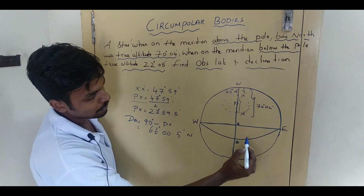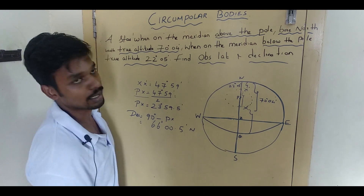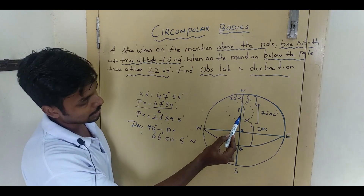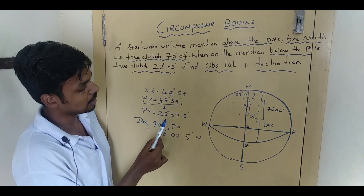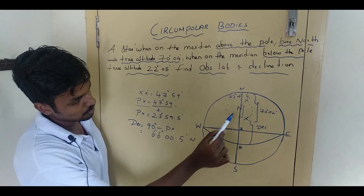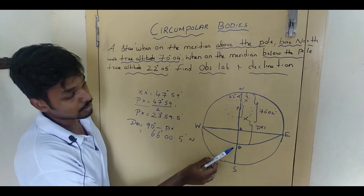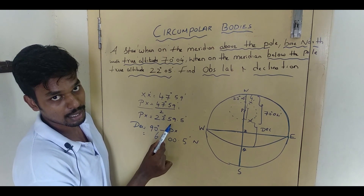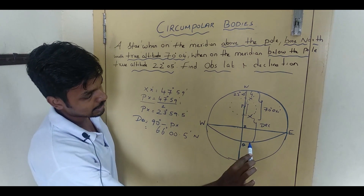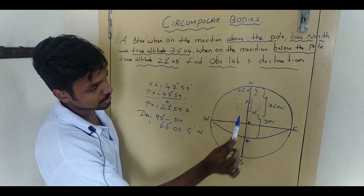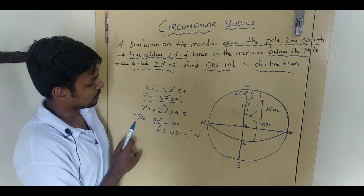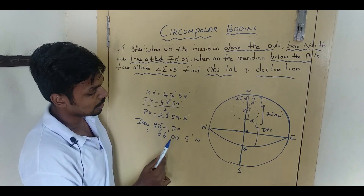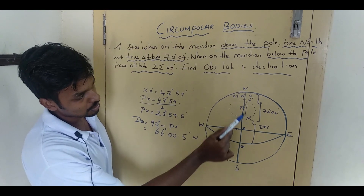Declination is from the equator to the celestial object. I already found PX equal to 23 degrees 59.5 minutes. Since pole to equator is 90 degrees, declination equals 90 degrees minus PX. So declination equals 90 degrees minus 23 degrees 59.5 minutes, which gives 66 degrees 00.5 minutes North.